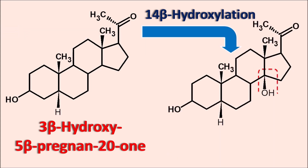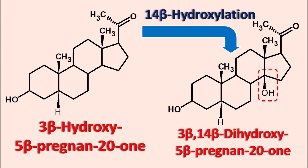The methyl group at the other bridgehead is also in beta configuration, so rings C and D are cis-fused. That is why digitalis glycosides have four rings with cis A/B fusion and cis C/D fusion. The ring C and D are cis-fused because of the beta OH group. This intermediate is 3-beta,14-beta-dihydroxy-5-beta-pregnan-20-one. Now all structural modifications required for the steroidal nucleus are achieved. The last modification is conversion of the two-carbon side chain at the 17th position into a five-membered lactone ring.